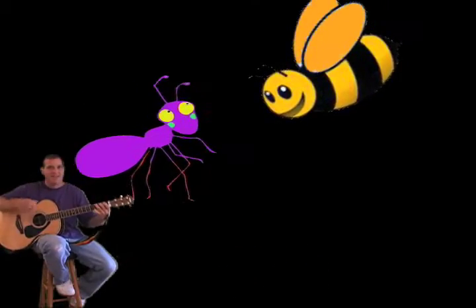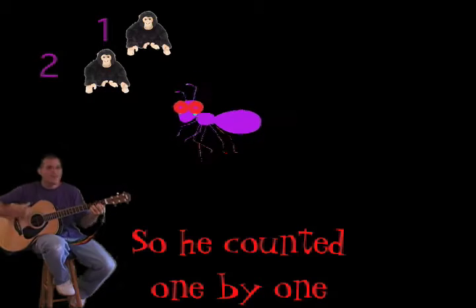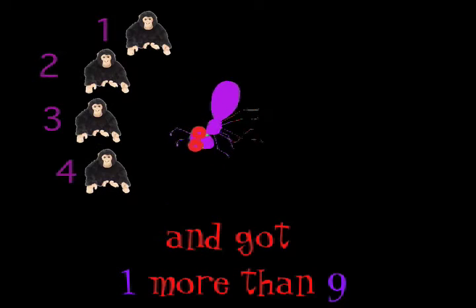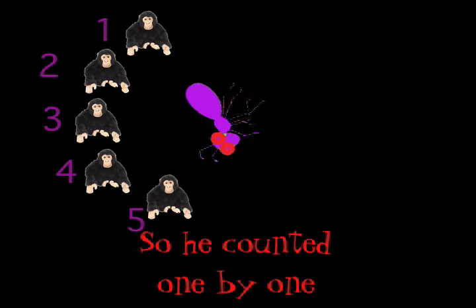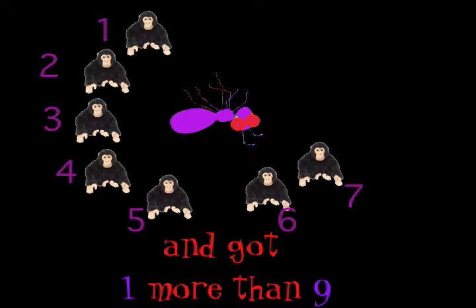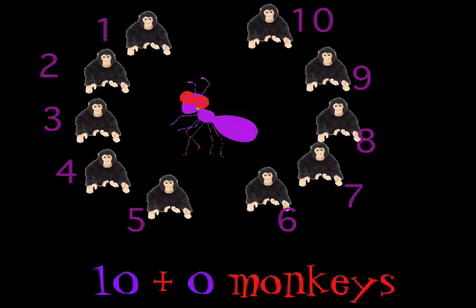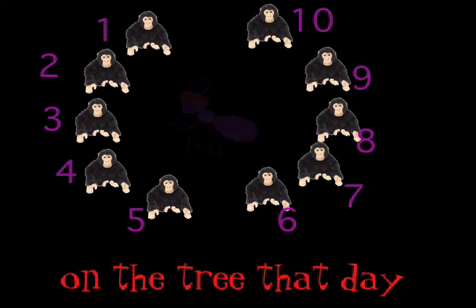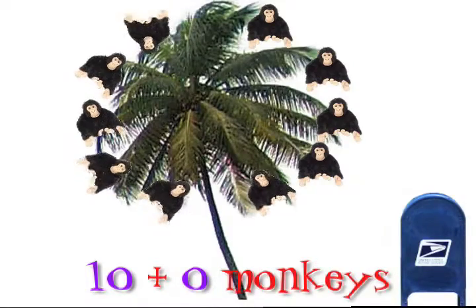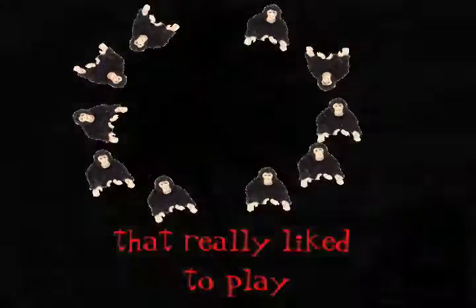She turned to tiny and counted one more time. So we counted one by one, and we got one more than 9. So we counted one by one, and we got one more than 9. 10 plus 0 monkeys, 10 plus 0 monkeys, on the tree that day. 10 plus 0 monkeys, that really liked to play.